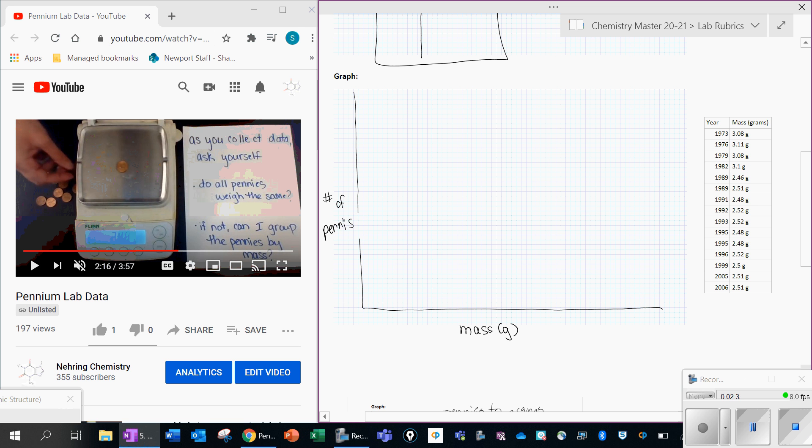And then you want to think about an appropriate data range here. So it looks like our mass goes from like 2.46 to like 3.1. So maybe you'd have this over here on this end be like 2.4 and over here be like 3.2. So you want to pick a range that matches your data. And then you have to decide every four boxes, what that's worth. So decide what your scale is going to be before you start plotting any data points.